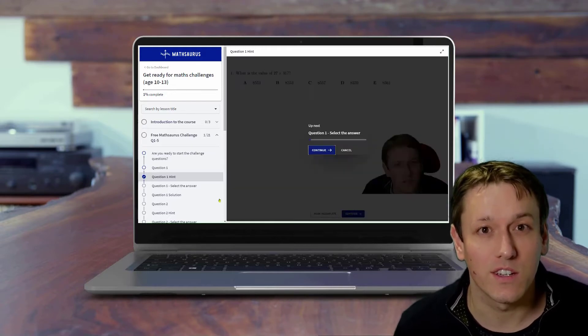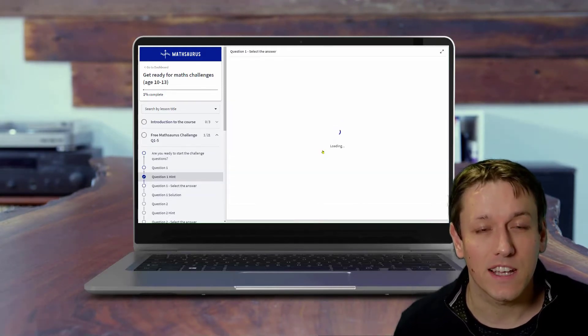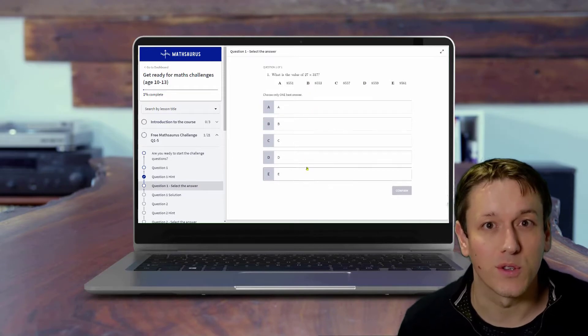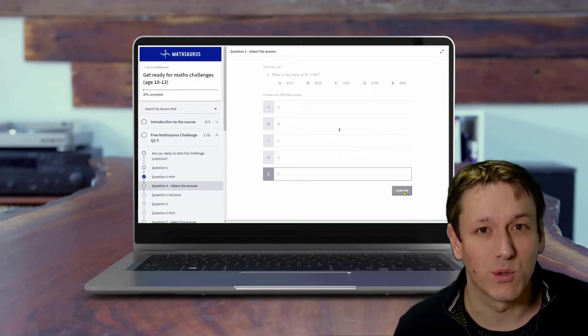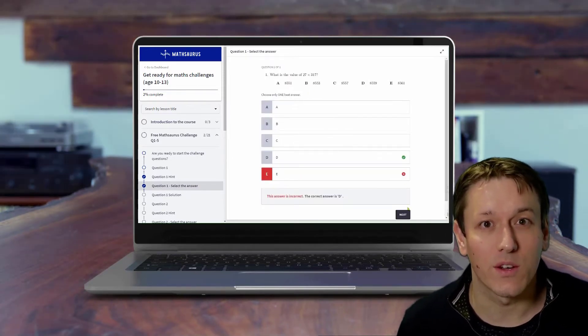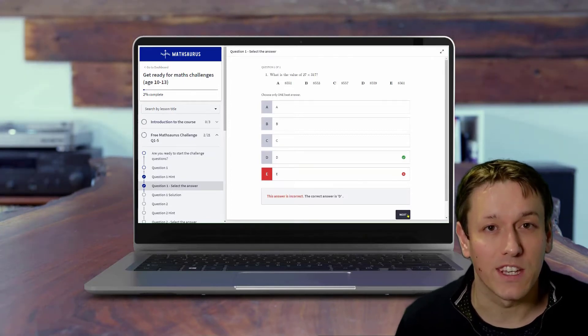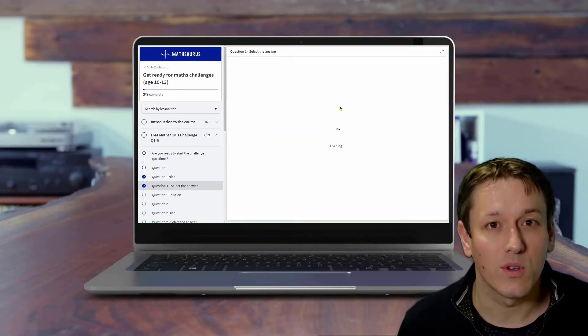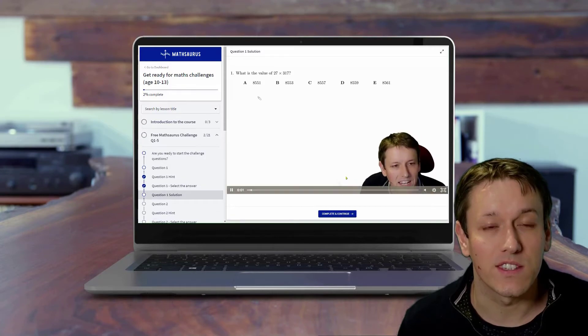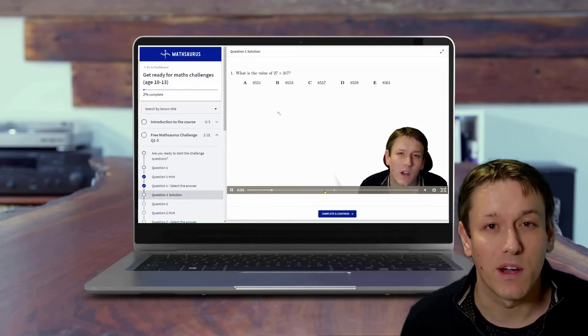Once you think you've got the answer, you can choose the answer from a selection of multiple choice options on the screen. It'll tell you whether you're right or wrong, then you can either have another go at the question if you got it wrong, or watch my video solution if you are really stuck, or if you want to see if there's another way of solving the problem apart from the way that you did it. And it really is a totally free course, so I really hope you'll sign up below and work through these problems with me.